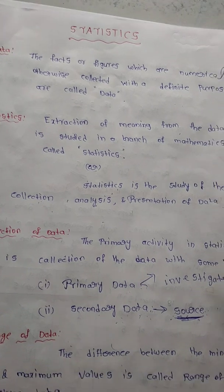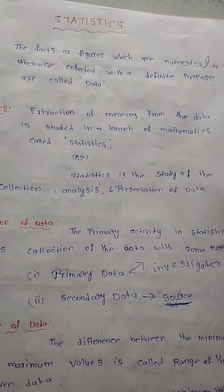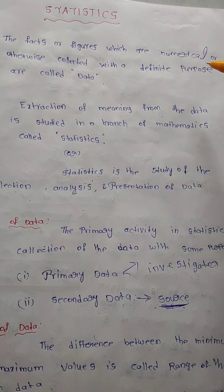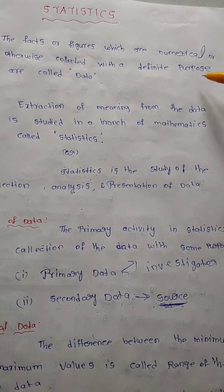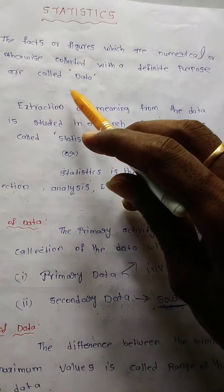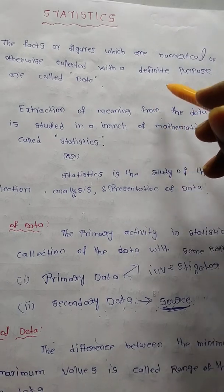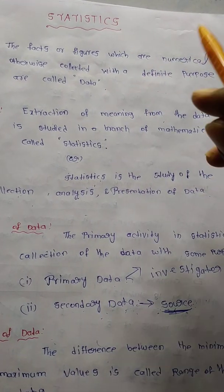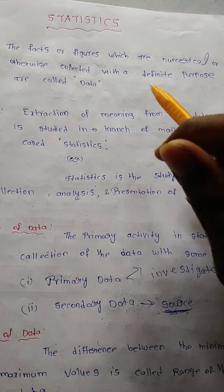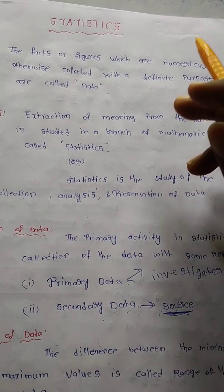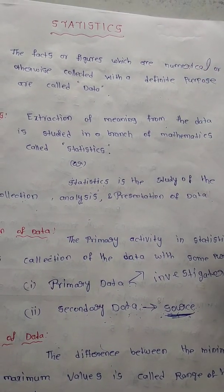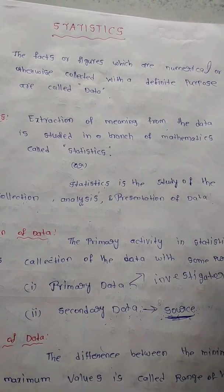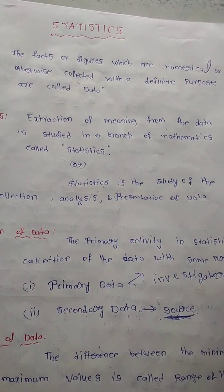First, I will discuss about data. What do you mean by data? The facts or figures which are numerical — that means numbers — or otherwise, collected with a definite purpose, are called data. For example, if I ask what are the ages of your family members, you can say your family members' ages directly. That is one data — we are collecting your family members' ages as data.